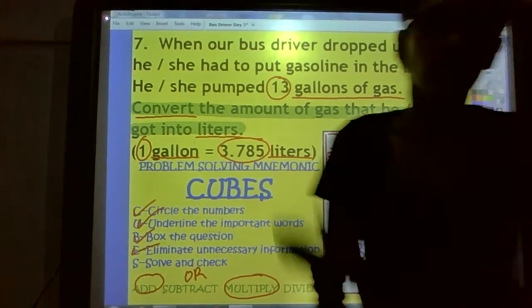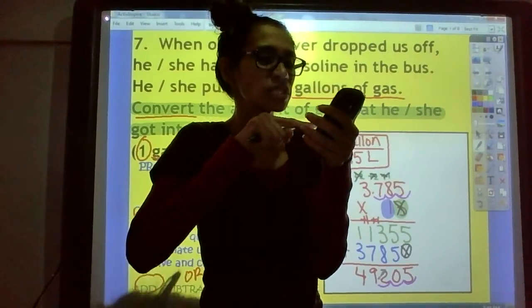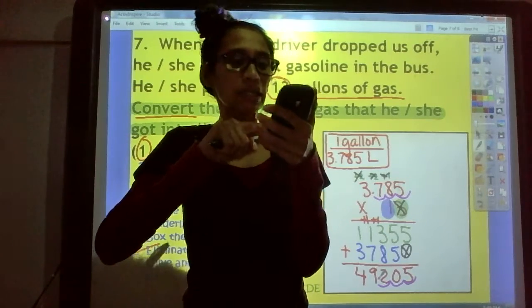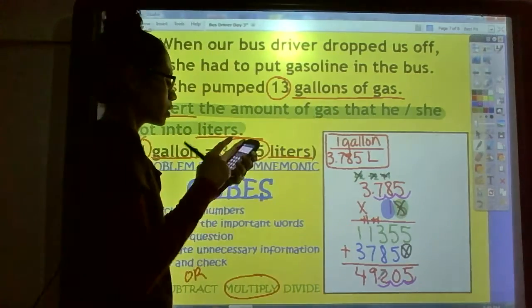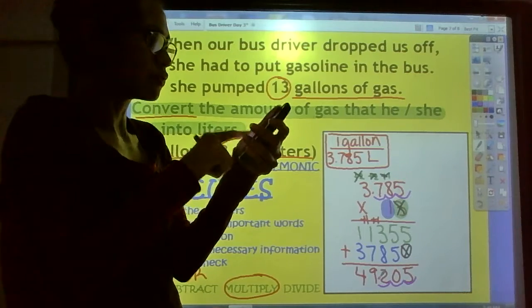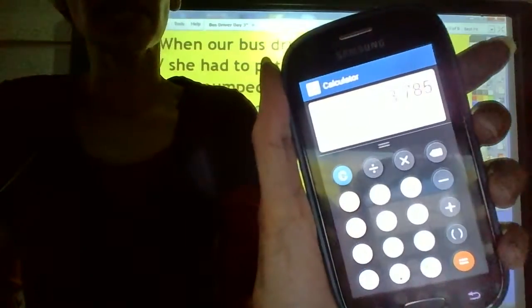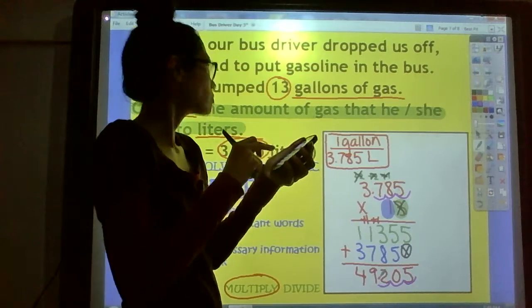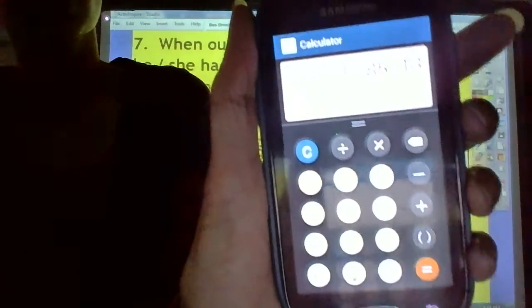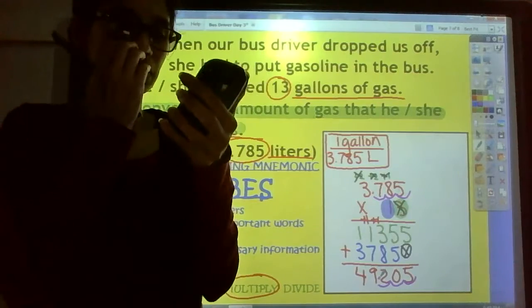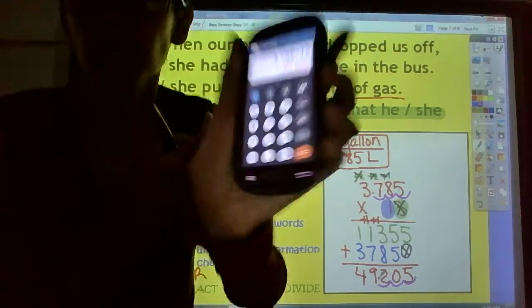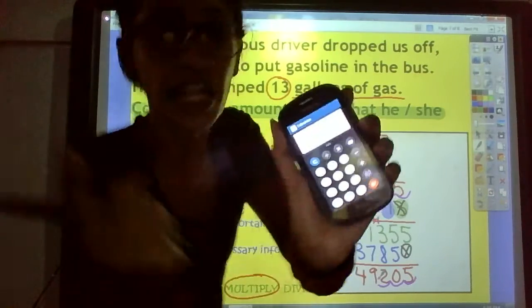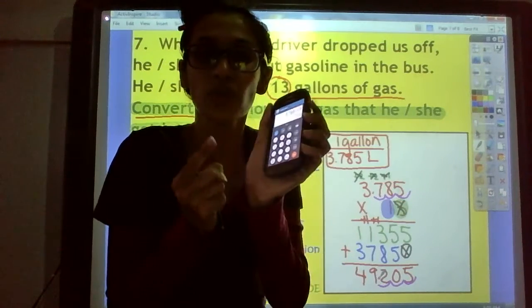Now we need to check our work. Check it with the calculator. Let me see. Where's my calculator? So 3.785 thousands, just like that, times 13. Just like that. Equals. Yeah, look. Not only did I get the digits right, I have the decimal in the right spot. And I know you do too.